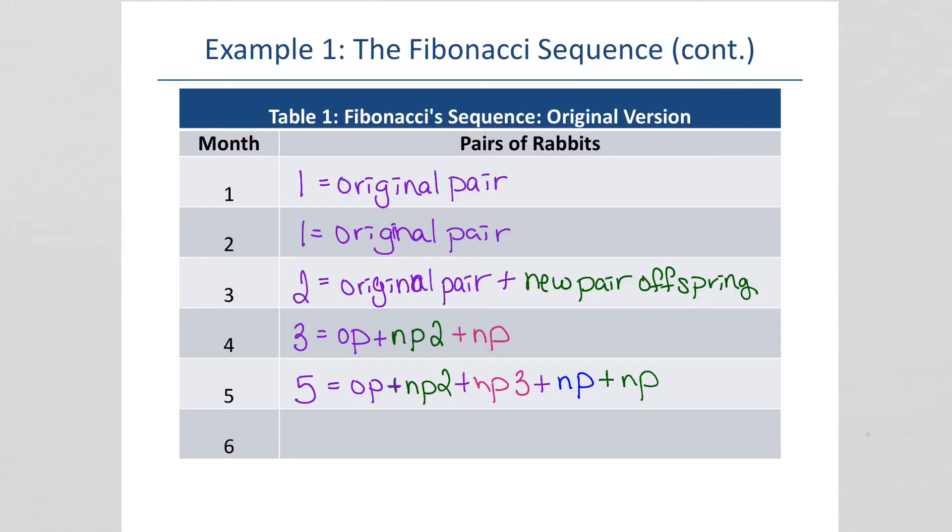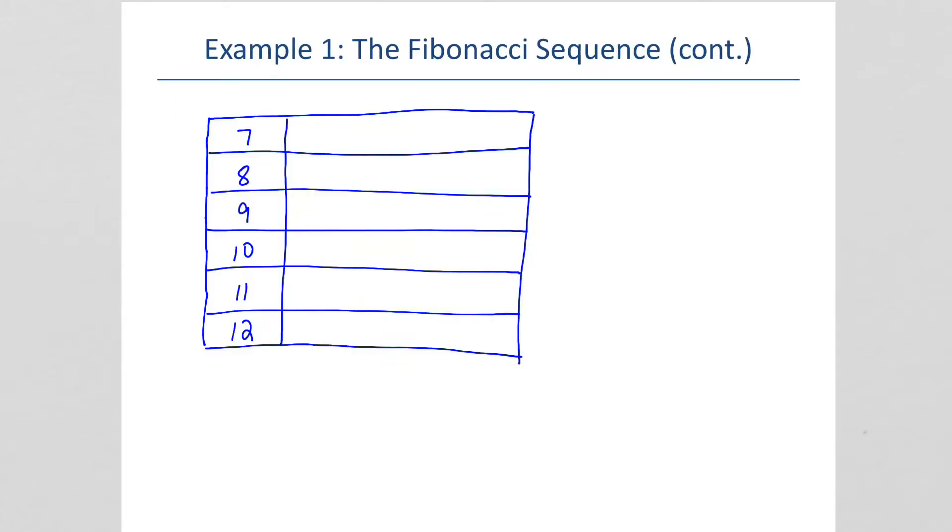So, you get the idea. The next month, we'll have five plus three or eight rabbits. The next, five plus eight, 13 rabbits. Eight plus 13 is 21 rabbits.